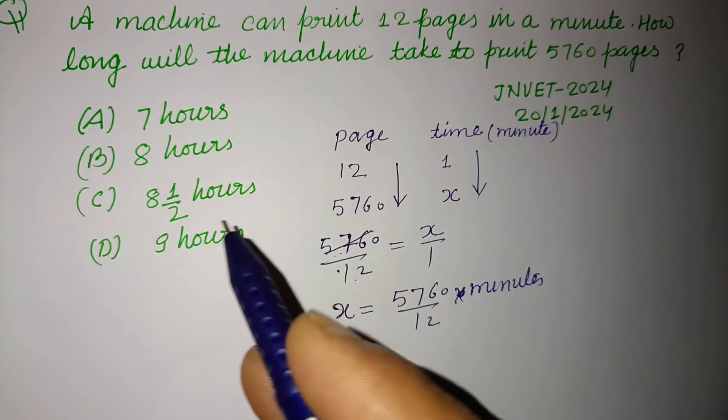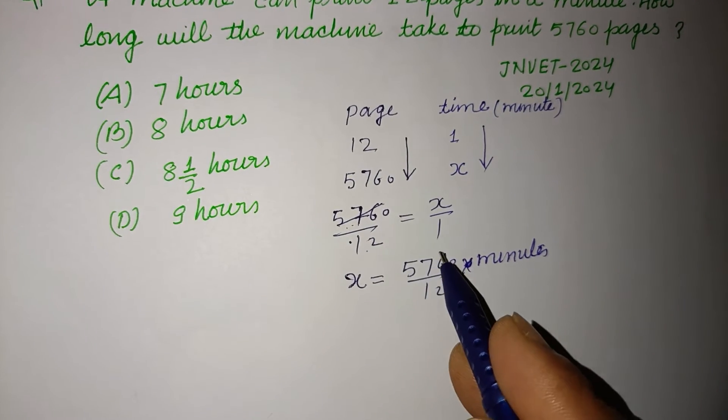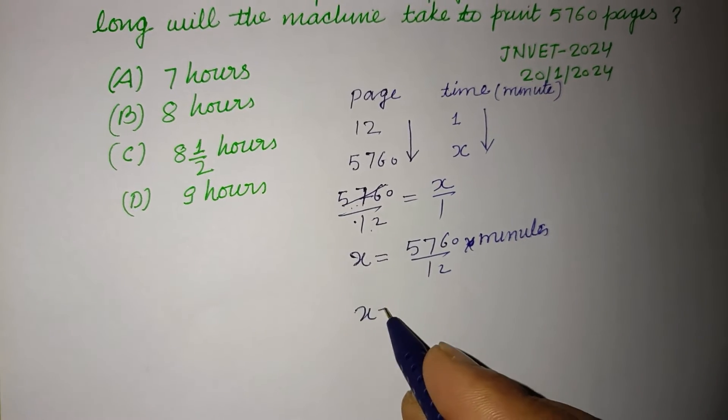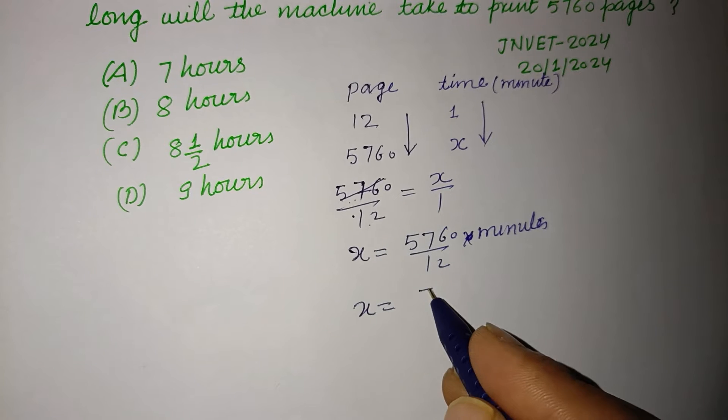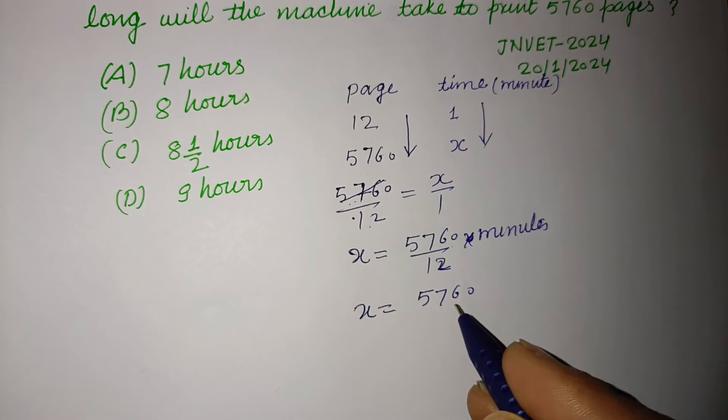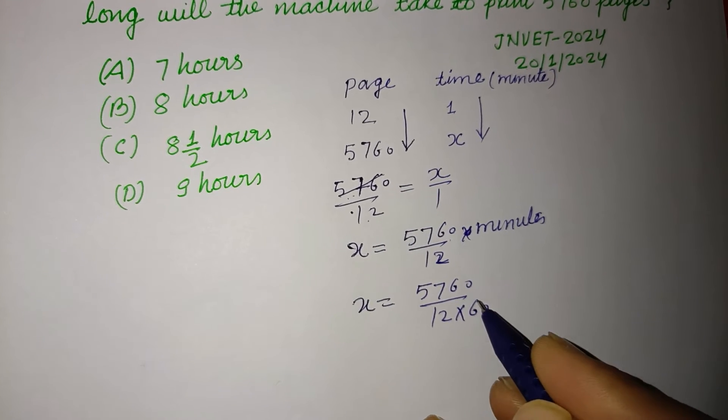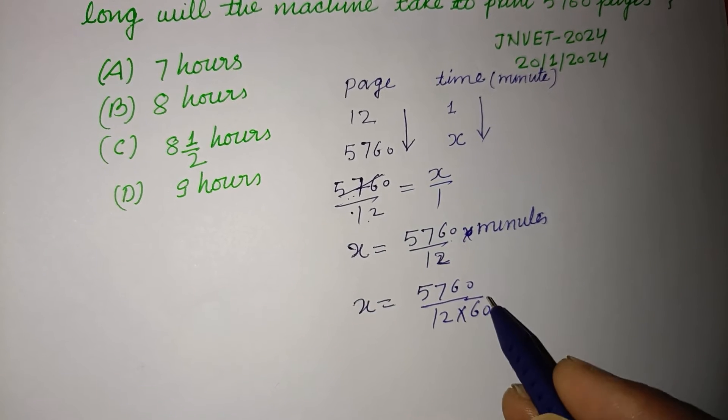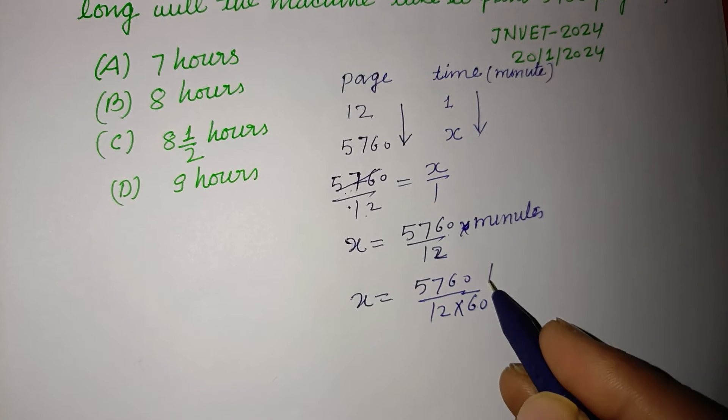And answer is required in hour. So we multiplied this by hour. By 60. Not multiplied by 60 but divided by 60. Because this is in minute, if we divide minute by 60, we got hour.